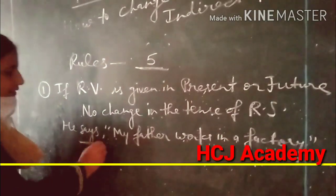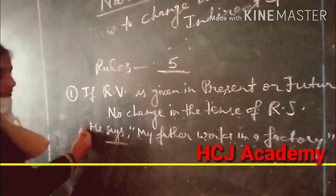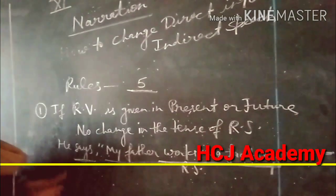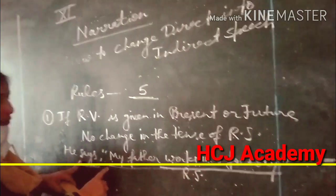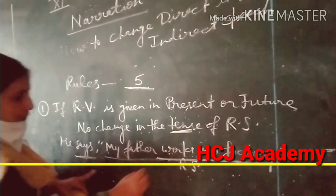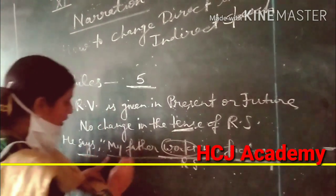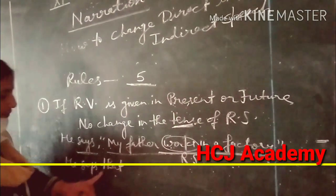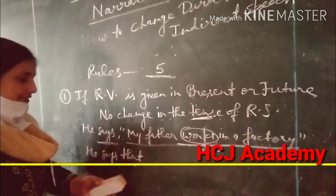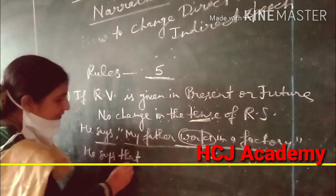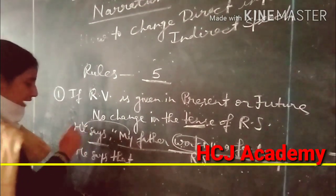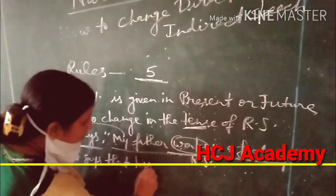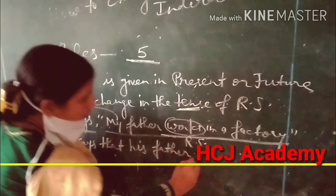Now see — 'he says' is the reported verb because it is outside the inverted commas. 'My father works in a factory' is the reported speech because it is enclosed between the inverted commas. Since the reported verb is in present tense, don't change the tense of the reported speech. We are combining the sentence into one sentence: 'He says that his father works in a factory.' Here 'my' changes to 'his' according to the subject.